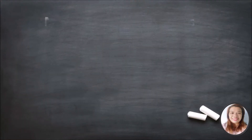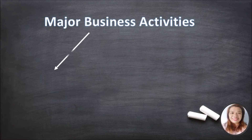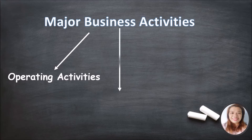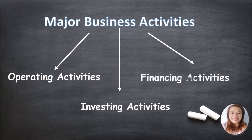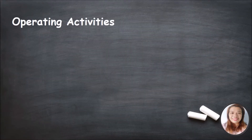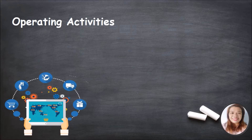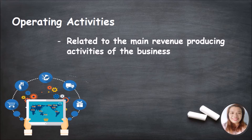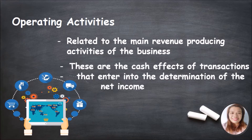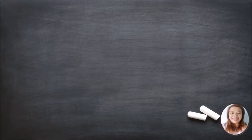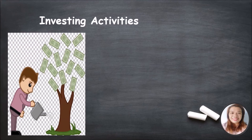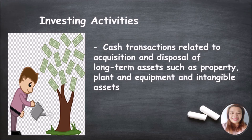There are three major activities of the business: operating activities, investing activities, and financing activities. Operating activities are related to the main revenue-producing activities of the business — the cash effects of transactions that enter into the determination of net income. Investing activities are cash transactions related to the acquisition and disposal of long-term assets such as property, plant and equipment, and intangible assets.